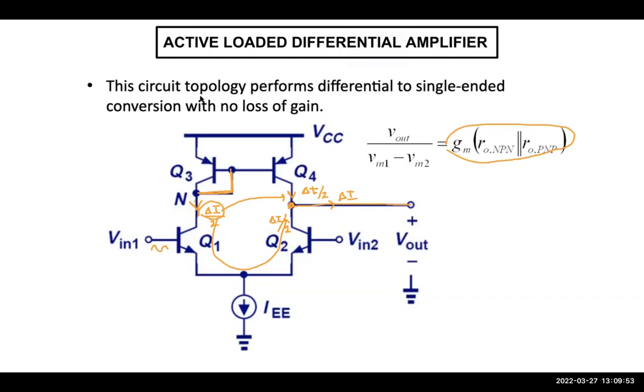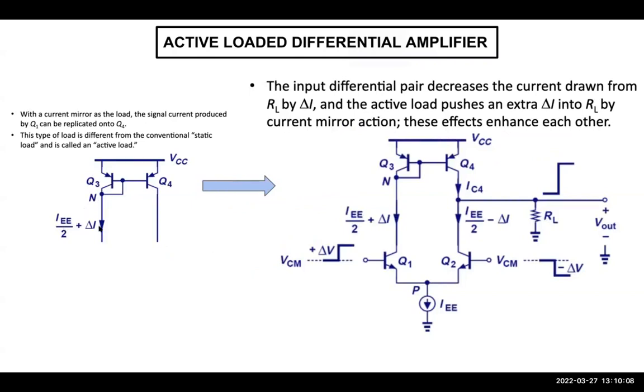So we don't see it over 2 here at the denominator. And that's why we get 2 times of gain compared to the other architecture, which means now there is no loss of gain. It shows it a little bit nicer. If you check this, with a current mirror at the load, the signal current produced by Q1, due to a small change at the input, we have this small delta I.